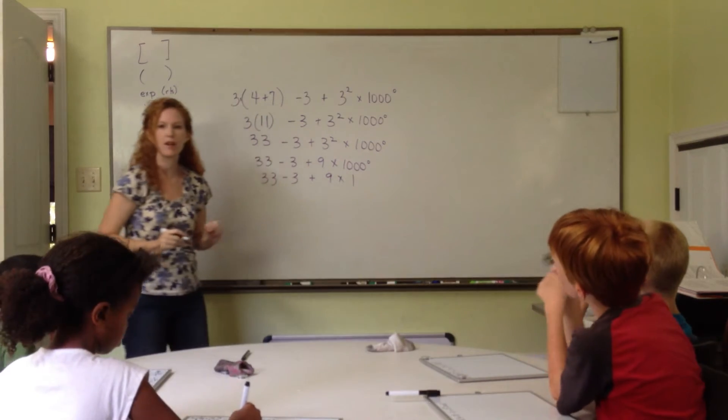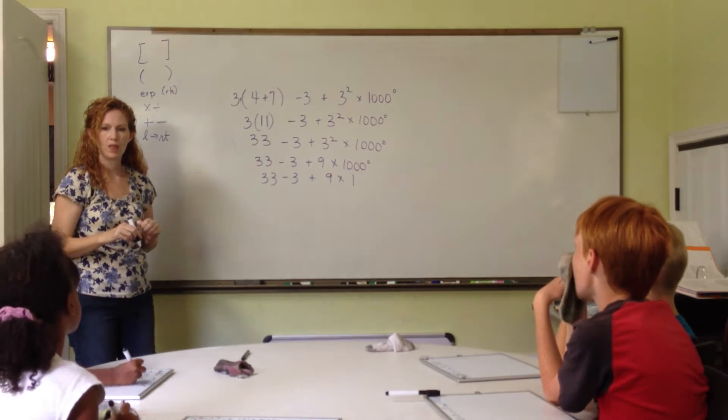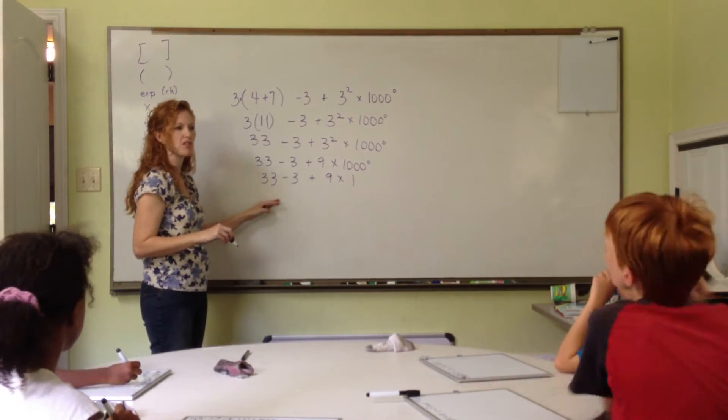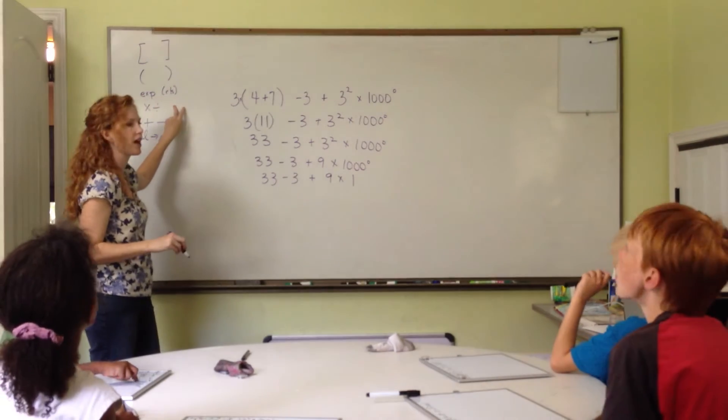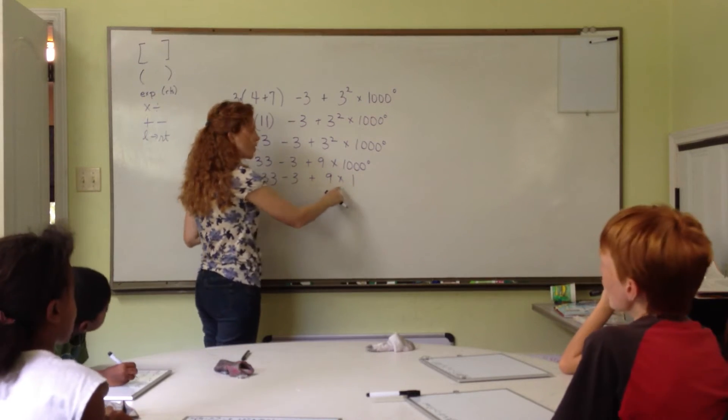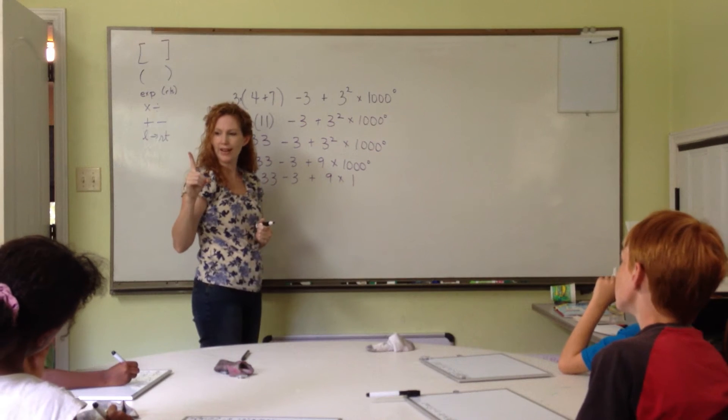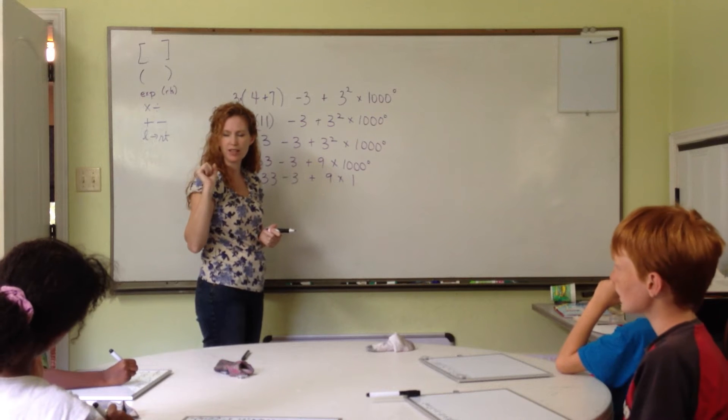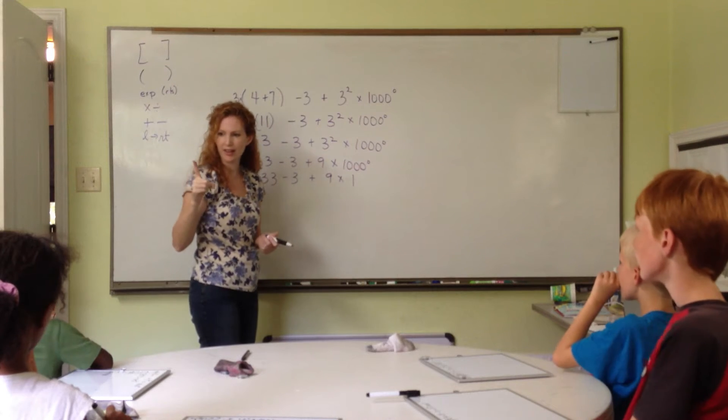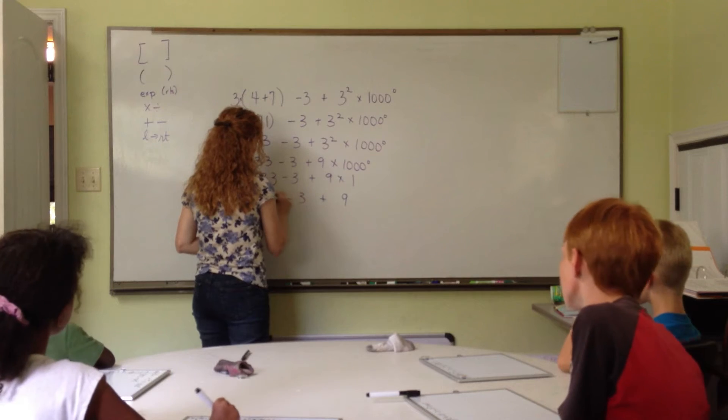And what do we do next? Aubrey, can you look and tell us what we have left and what we have to do next? Let's do what we have to do 33 minus 3. Can we do that yet, though? We still have something that's higher up on the list. What do we have? A times and divide. We have a times, right? We have to do that first. So, what's 9 times 1? Jeb? If we have one 9, how much do we have? Let's try to skip count by nines. 9. Oh, all we want is 1. So, that's it. 9. So, 9 times 1 is 9.